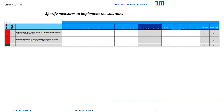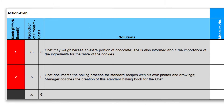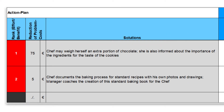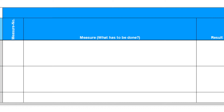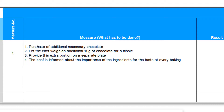On the left side of the action list in SigmaGuide, the developed solutions are listed with the effort-benefit rank and the expected reduction of problem costs if the causes are under control. In the next columns, the solutions can be specified as concrete measures. First break down the solution into concrete tasks and arrange the tasks in chronological order. For our taste problem, we will purchase additional chocolate, let the chef weigh an additional 10 grams of chocolate for her nibble, and we will provide this extra portion on a separate plate.